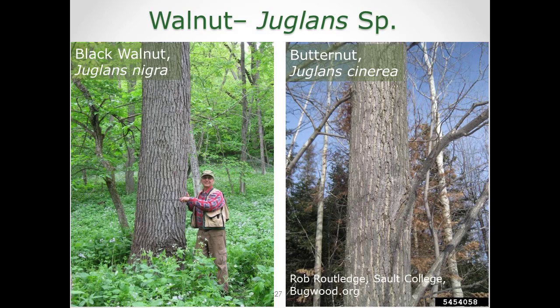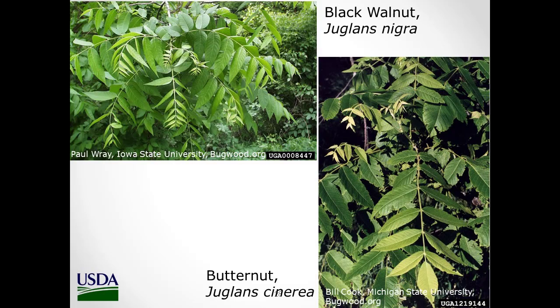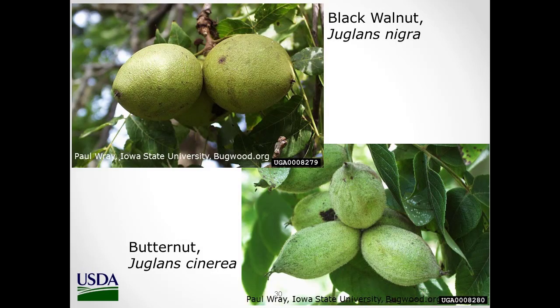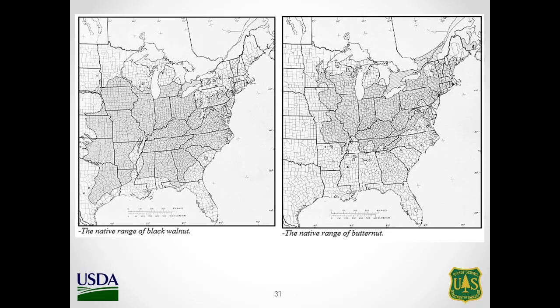Let's talk about walnut. There's black walnut and then our white walnut, or butternut. The foliage is hard to tell apart from the leaves alone, but you can tell them apart from the buds and the chambered pith. The nuts are obviously different — the round brown nuts for walnut and the more oblong for butternut. Here's the native range of black walnut. We're getting kind of close to that northernmost boundary of its native range.